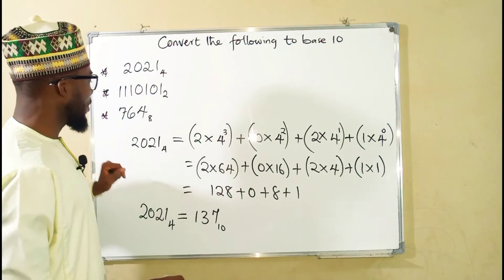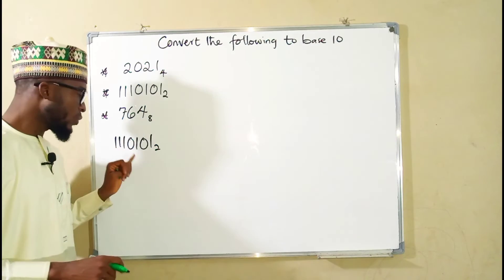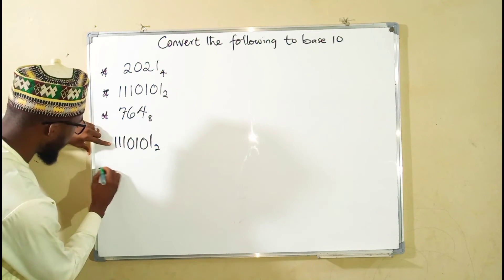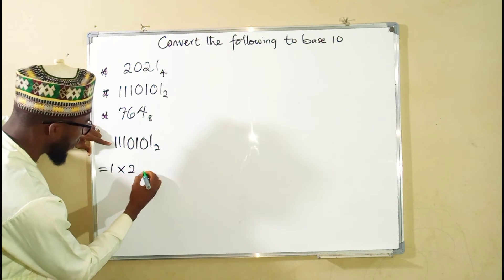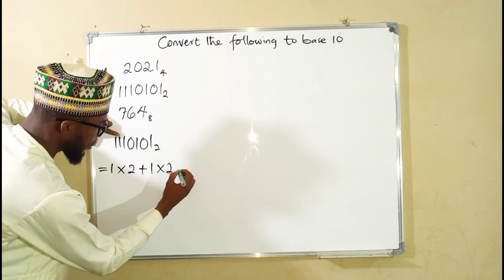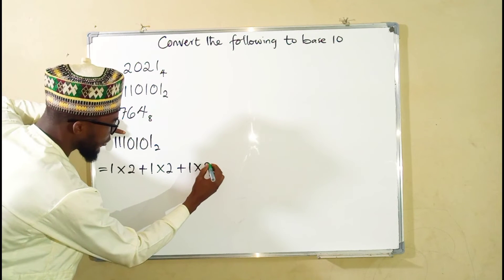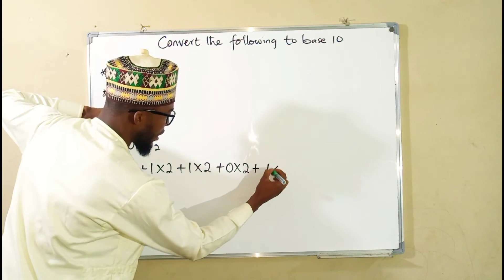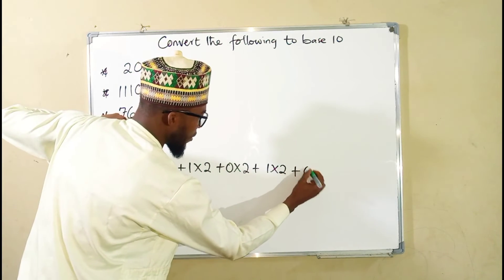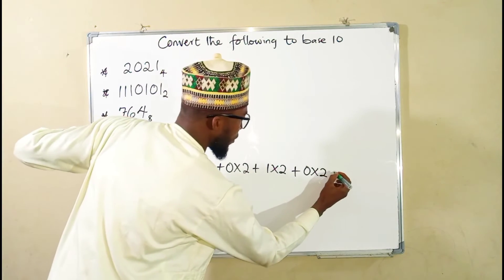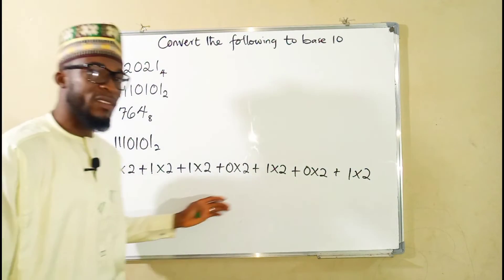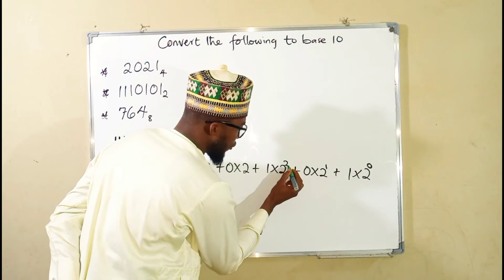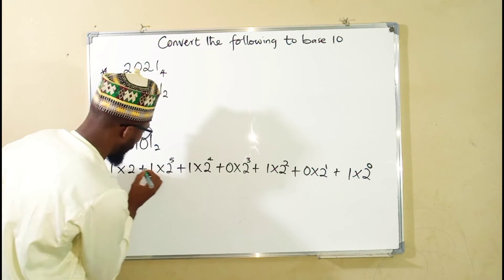Now let us see how we can convert the second number. We have 1110101 in base 2, and we are going to express it in powers of the base. The base is 2. We take the first digit 1 and multiply it with 2, add, take the second digit 1 times 2, add, the third digit 1 times 2, the fourth digit 0 times 2, then 1 times 2, 0 times 2, and lastly 1 times 2. We assign indices starting from 0 on the right-hand side: 0, 1, 2, 3, 4, 5, 6.